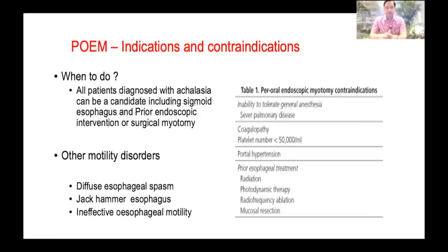When we cannot do POEM: patients who cannot tolerate general anesthesia because of severe cardiopulmonary disease, and coagulopathy and thrombocytopenia that would preclude any major surgery. In the presence of portal hypertension, there may be a lot of collaterals around the esophagus and the chances of bleeding during myotomy are very high — these patients should not undergo POEM.